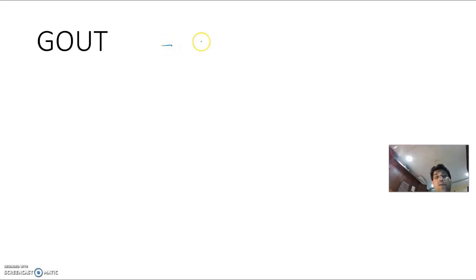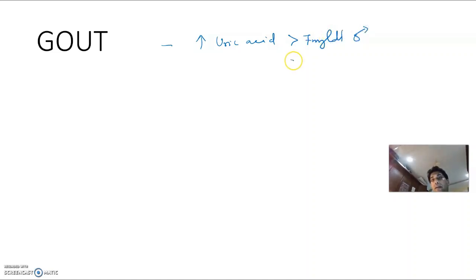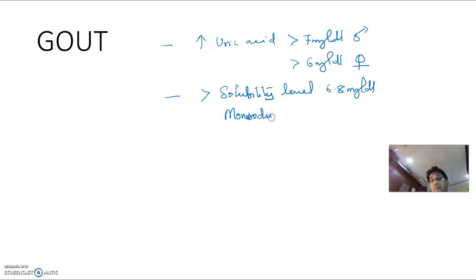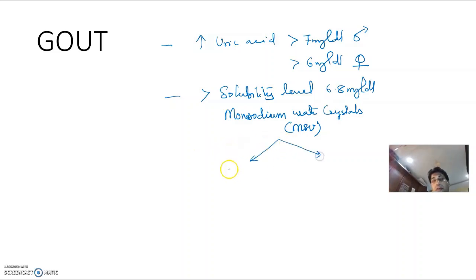Gout is a disorder wherein there is increased uric acid — greater than 7 mg/dL in males, greater than 6 mg/dL in females. Because it exceeds its solubility level of 6.8 mg/dL, uric acid gets deposited as monosodium urate (MSU) crystals.